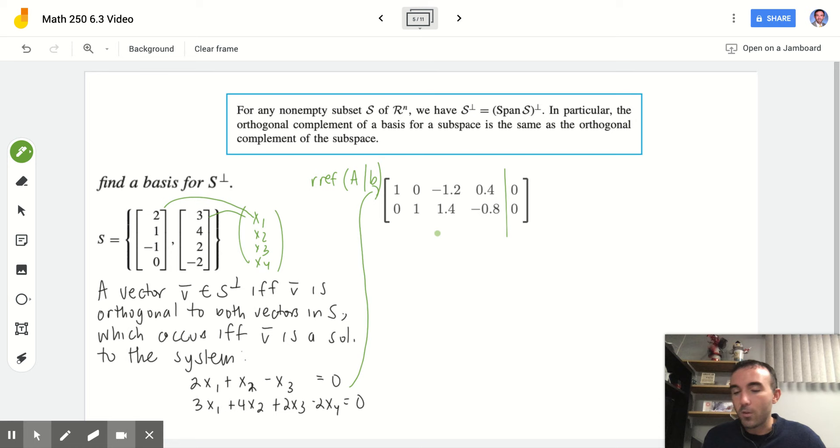So once we arrive at that, we can solve this out for x1, x2, x3, x4, and take the vectors we get and form a basis out of it. So this first equation tells me that x1 equals, I'll just change the 1.2 to 6 over 5, and I'll change this to 2 over 5. If I just solve for x1 by moving these guys over to the other side, I will have x1 equals 6 fifths x3 minus 2 fifths x4. And then same thing for the second one. I'm going to change the 1.4 to 7.5 and then negative 0.8 to negative 4 fifths. I get x2 equals negative 7 fifths x3 plus 4 fifths x4. And then we know that x3 is equal to itself and x4 is equal to itself. Those are our free variables.